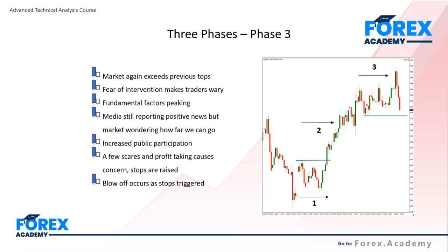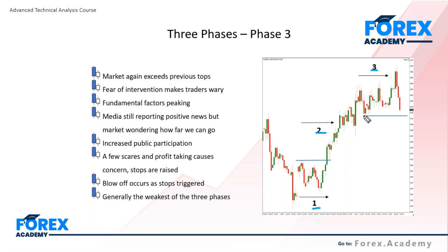We tend to see a blow-off in price action. Some stops are triggered. People are buying at the highs only to see markets move sharply lower very quickly — they get scared and cover their positions. That adds further weight to a more volatile environment. From a trend perspective, Phase 3 is generally seen as the weakest of the three phases. If the trend is in Phase 3, it means the trend is very mature, and a mature trend has a much lower probability of continuing in an upward direction. Therefore, it must be regarded as the weakest phase in terms of what a trend looks to deliver.